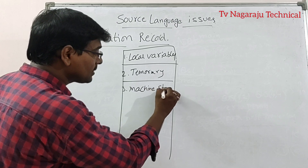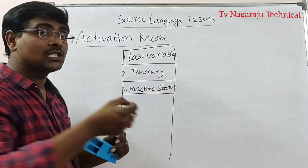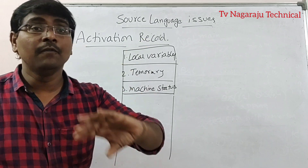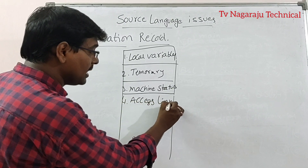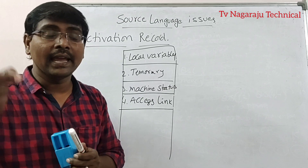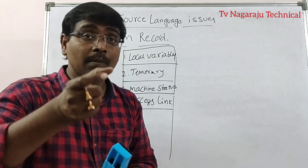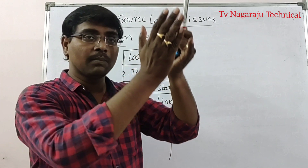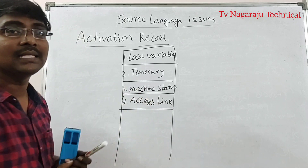Next is machine status: before calling the procedure, it stores the status of the machine — to hold the status of the machine before calling the procedure. Next is access link, which is optional. It holds the non-local data of another activation record. If I want data of any other activation record, that reference is provided under the access link.